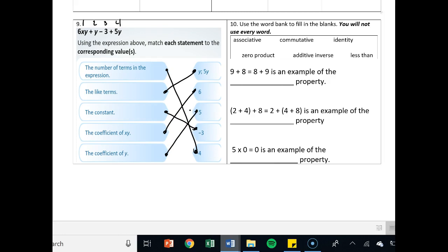It says use the word bank. You will not use every word. So when we have 9 plus 8 equals 8 plus 9, that is an example of the commutative property. How are you going to show work on a problem like this? You are going to say, hey, the order of addition doesn't matter. You can flip the order and still get the same answer.